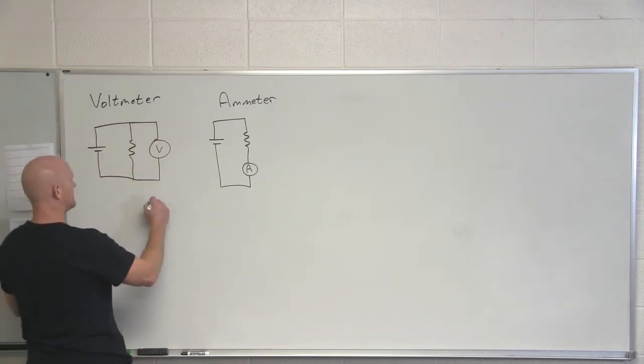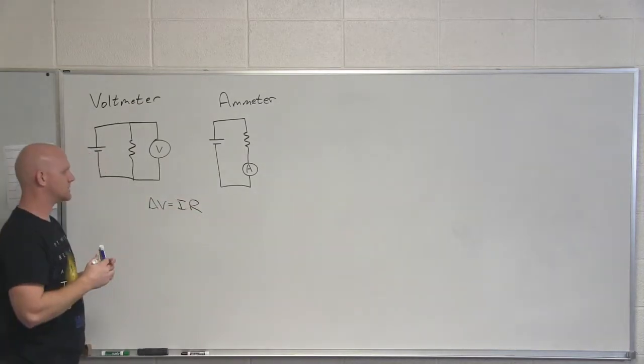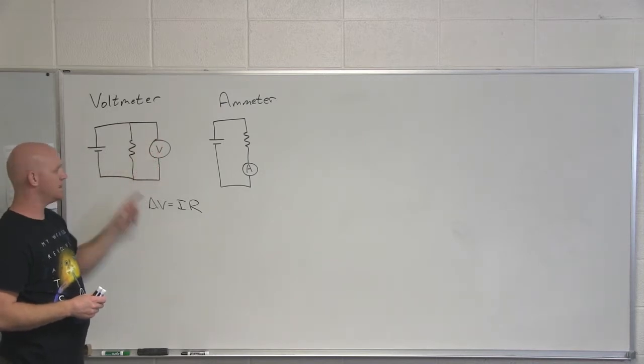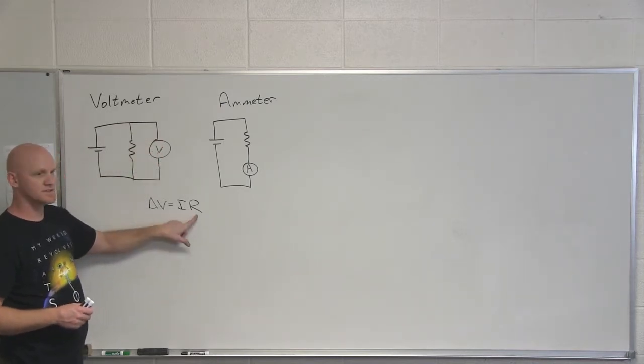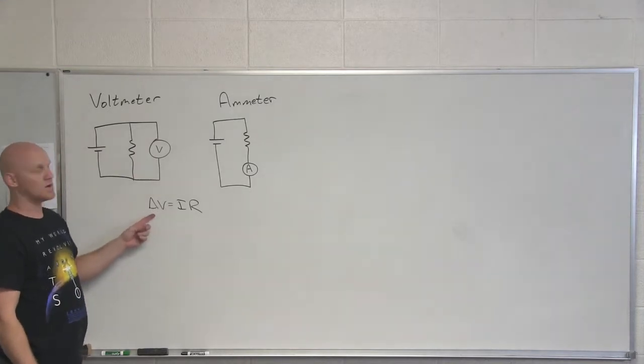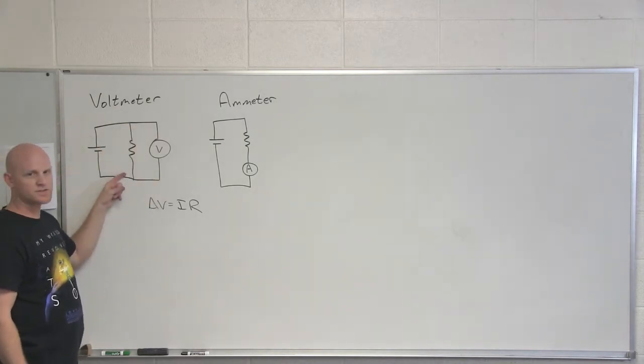And so if you look, if I do measure the tiny bit of current that flows through here, and I know that this thing has a super high resistance, what does that allow me to calculate? Yeah, the drop in potential as well. And so if I measure the drop in potential here, what's going to be true about the drop in potential across the resistor?